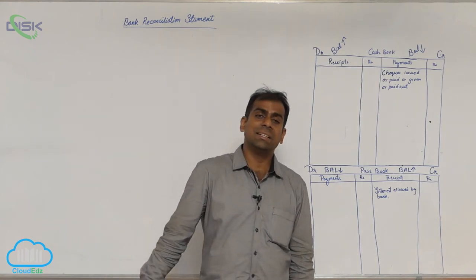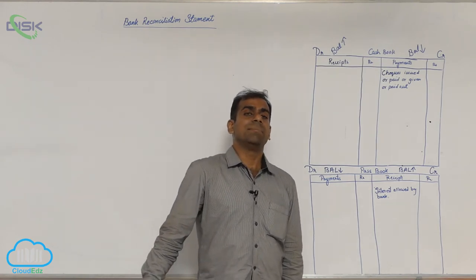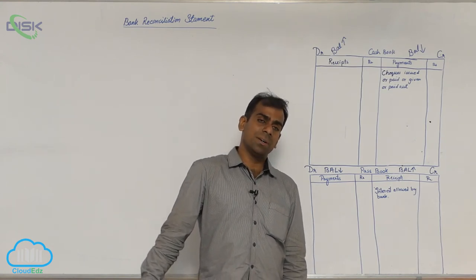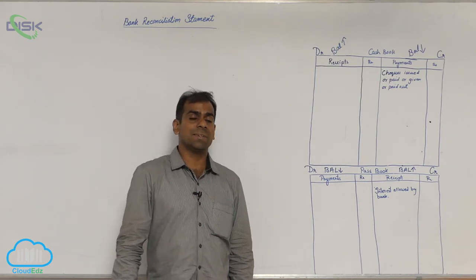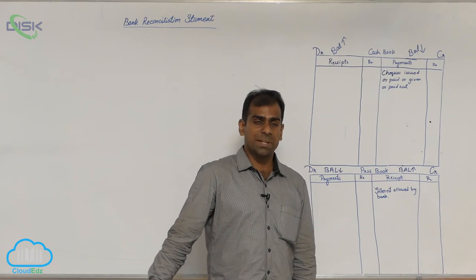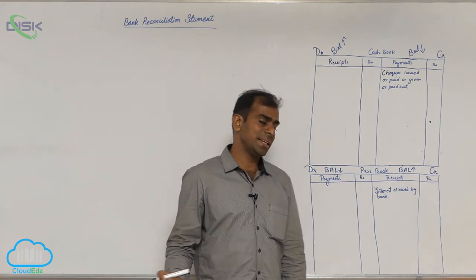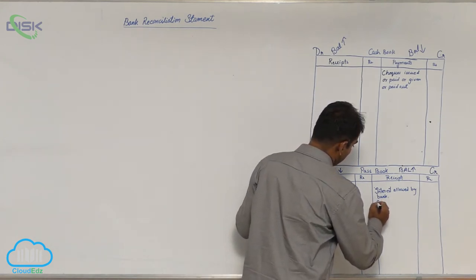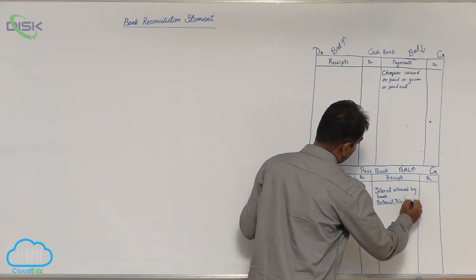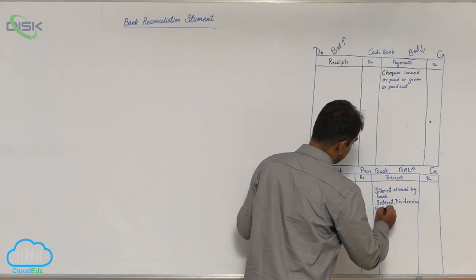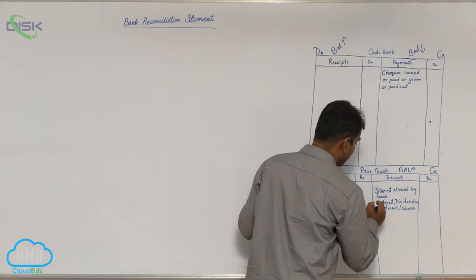The third item is interest and dividends collected by bank. The bank is collecting money that you are to receive as interest from someone or an organization because you have an investment with them. Dividends are given to shareholders when companies make a profit. Whenever the bank collects this money, it adds to your existing bank balance — your bank balance will increase. We record interest and dividends on investments and shares on the credit side of the pass book.